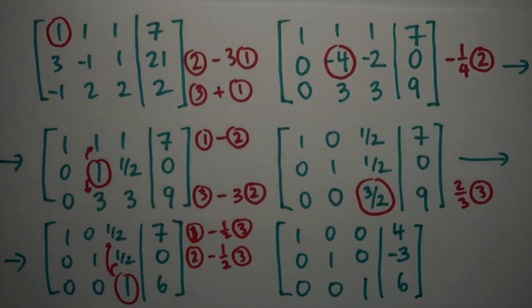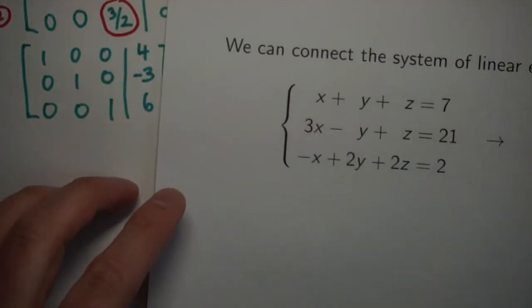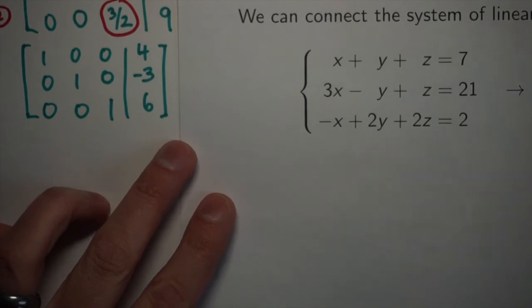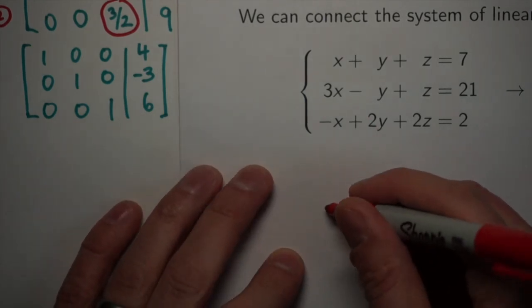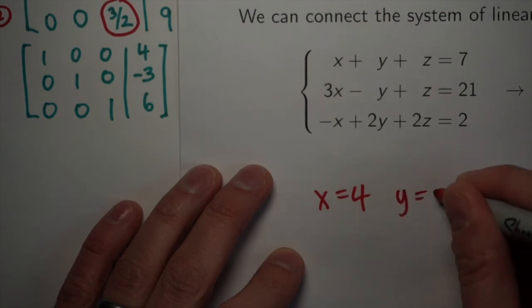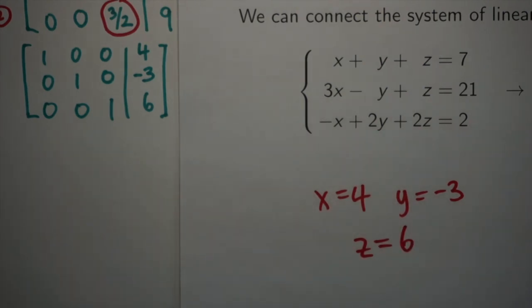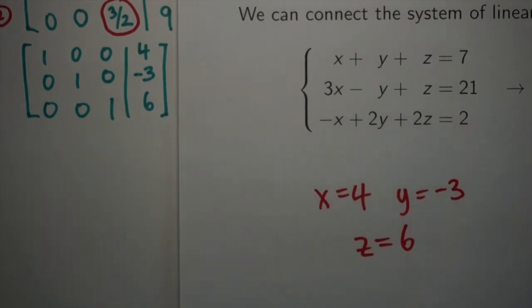Now that it's in diagonal form, I can just read off the solution to the system of equations that I had in the last video. From the first row, we see that x has to equal four. From the second row, we see that y has to equal negative three. And from the last row, we see that z has to equal six. You can check these in all the original equations, and these three numbers will satisfy all three of the equations.